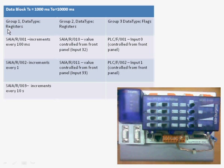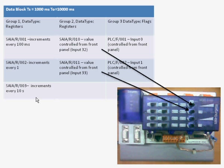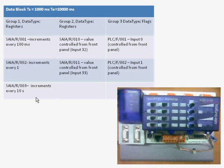The first group are registers. The first register increments every 100 milliseconds, the second increments every 1 second, and the third increments every 10 seconds. The second group are also registers, but those registers can be controlled from the front panel. The first register in this group has address 10 and the second has address 11. The third group is flags — we are going to read two flags whose values can be controlled from the front panel using switches.